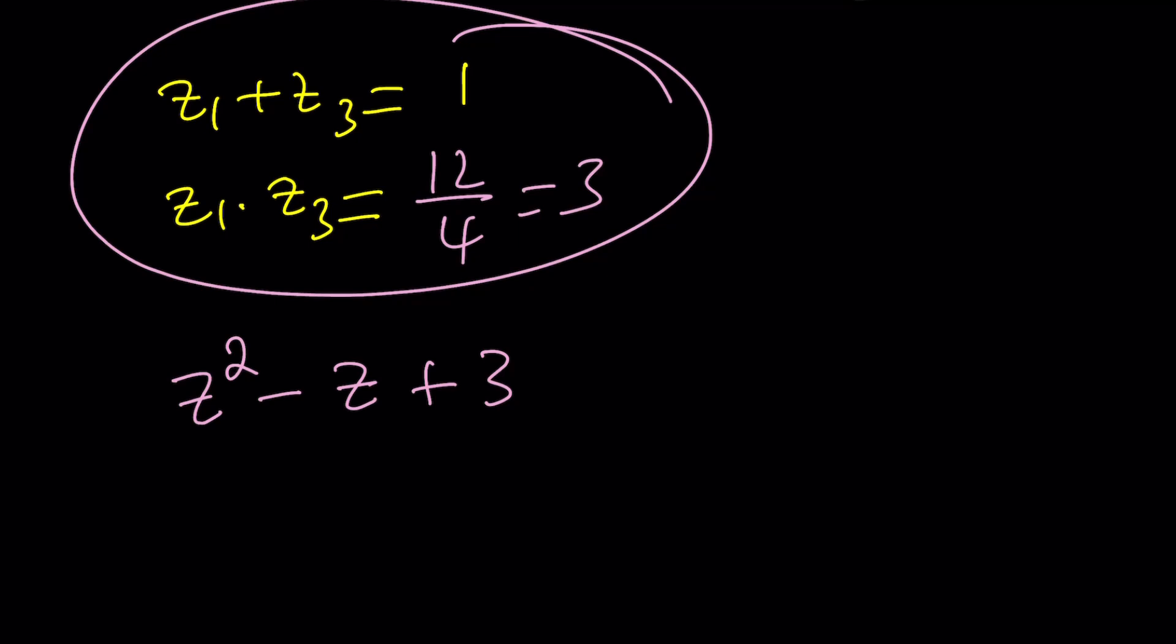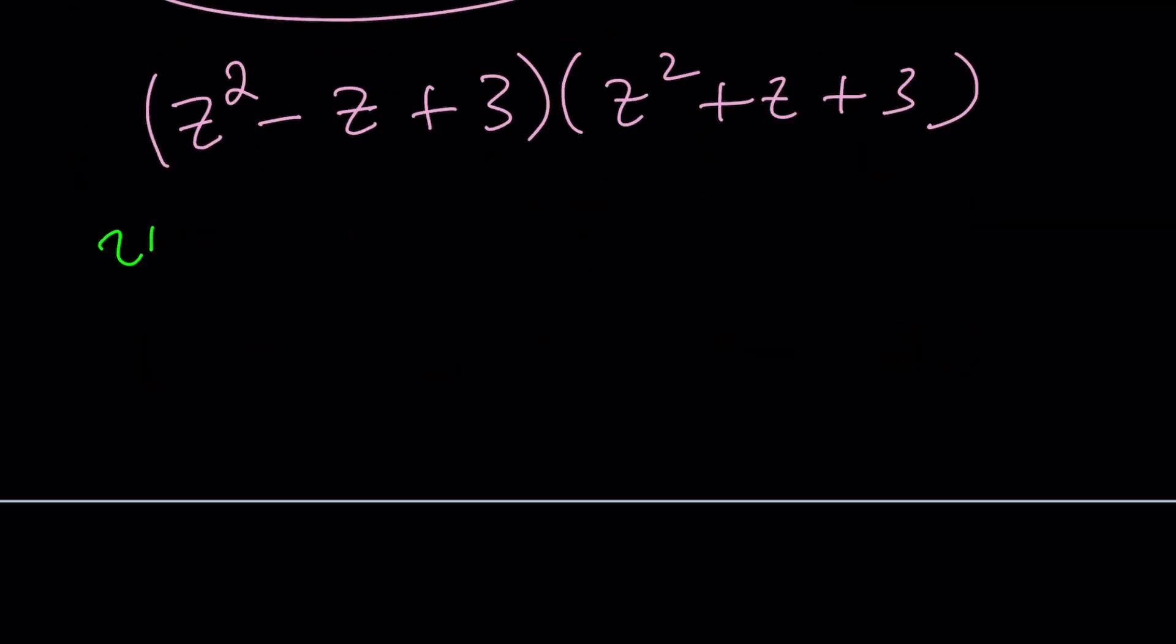If you do the exact same thing on z sub 2 and z sub 4, you get another factor, which is z squared plus z plus 3. This brings us to the end of the first method.